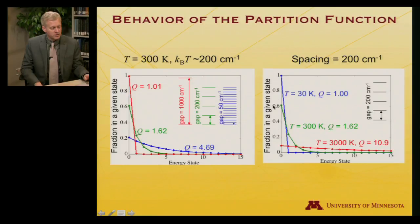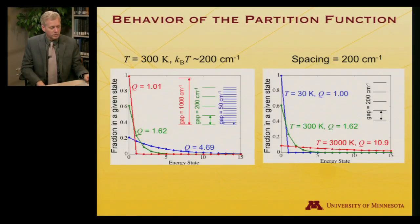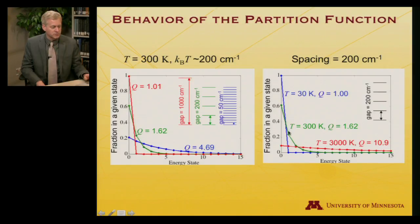Now, alternatively, let me look at a different thing. Let me keep the energy density a constant. So the spacing between the various states, still 200 wavenumbers. Now I'll look at what happens when I change the temperature. So I already showed you 300 Kelvin for a 200 wavenumber gap. That's this green curve, and it's the exact same green curve that's found over here. So 60% in the ground state, and 22% in the first excited state, and so on.